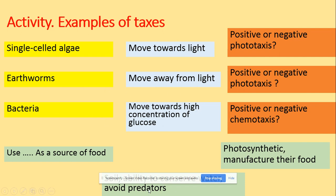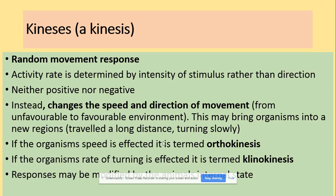Kinesis is a random movement — a random response. What's really important is that the activity rate is determined by the intensity of the stimulus rather than its direction. They are not positive or negative. What we see is a change in the speed and direction of movement. There are terms that stand for the speed and the organism's rate of turning, but we don't need to know those terms for the AQA specification. This response is random and the speed and direction of movement can change.